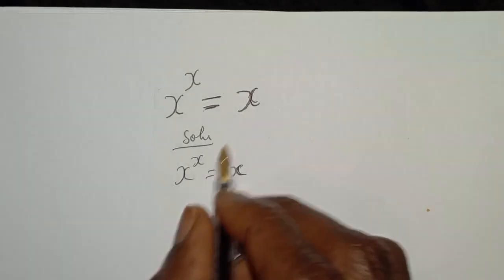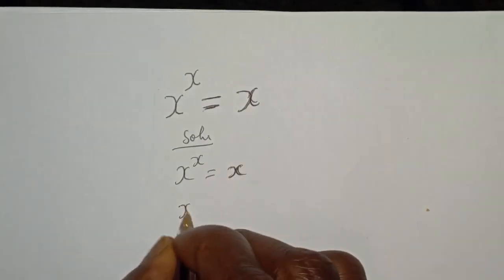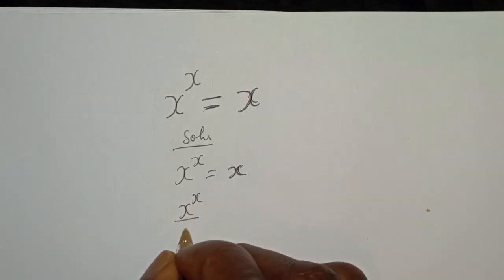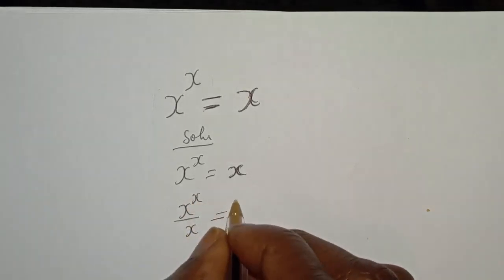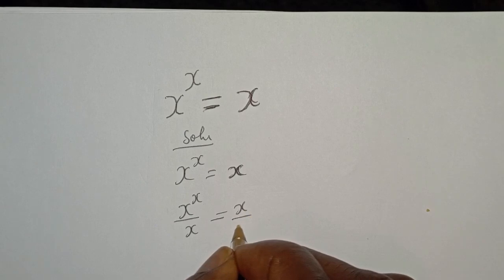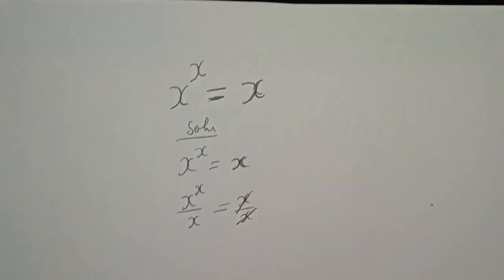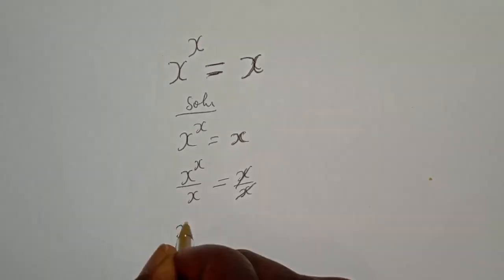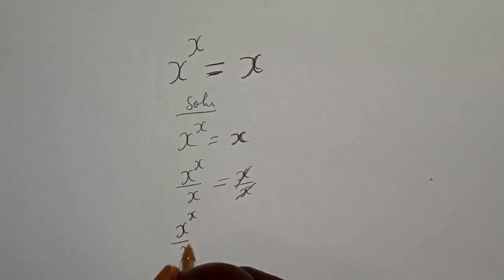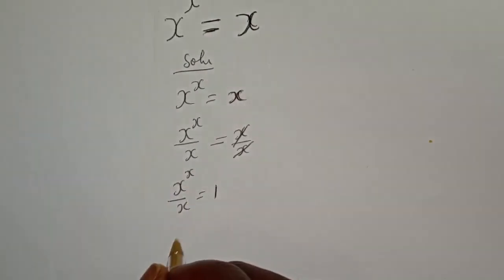Then let's divide both sides by x. s raised to the power of s divided by s is equal to x over s. This will cancel this. s raised to the power of s over s is equal to 1. Then this is s raised to the power of x minus 1 is equal to 1.